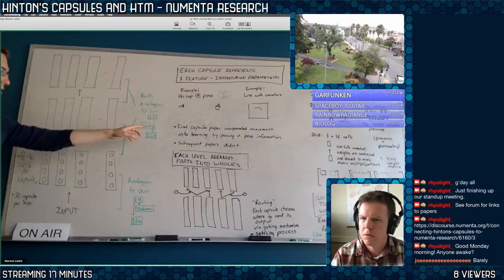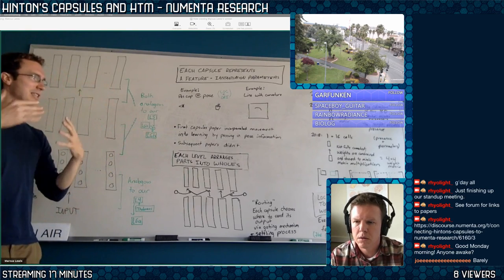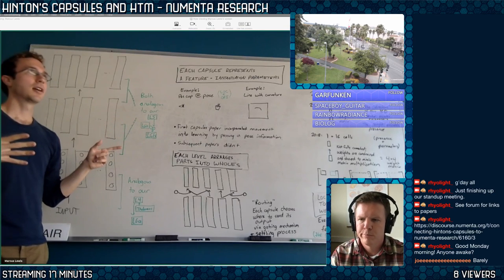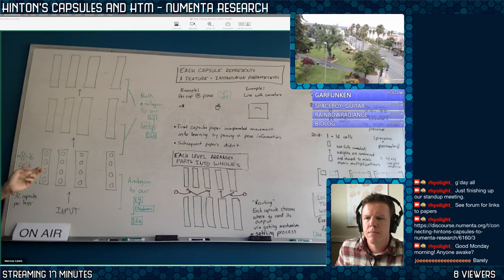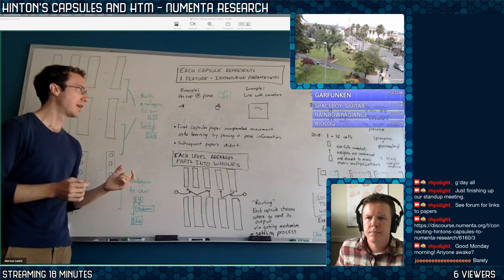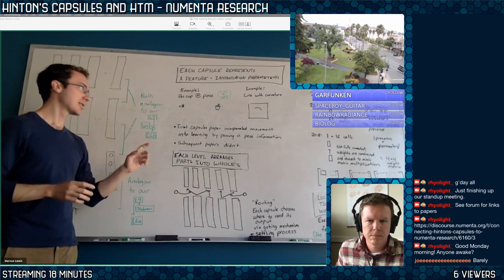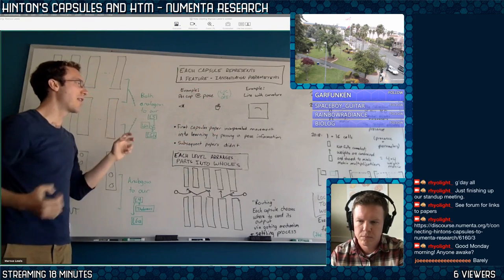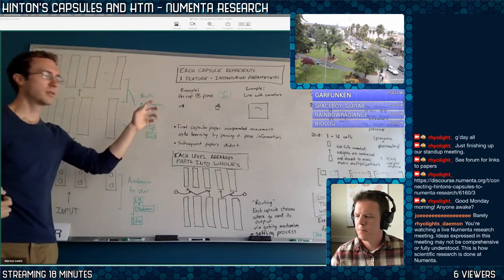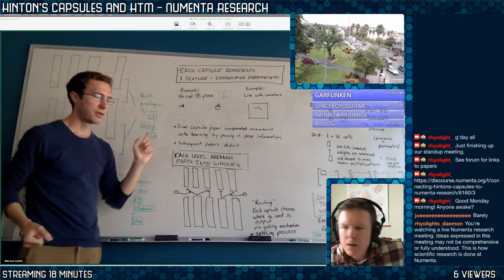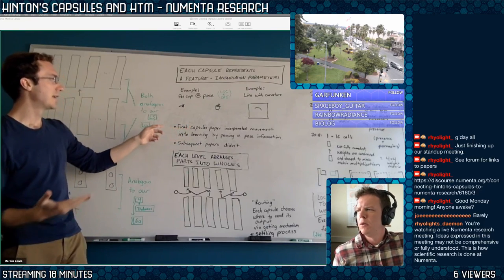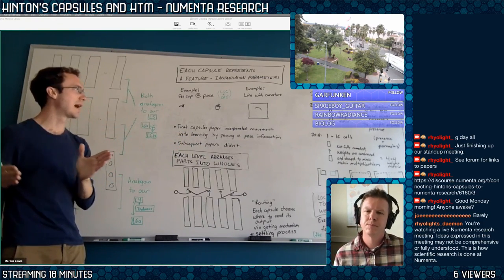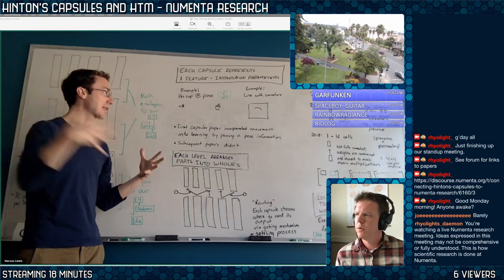One discussion topic I wanted to bring up, because it shows where they went a slightly different direction than I think we would. The first paper fed in essentially location information — at this sensor location, when the object is right here, here's what you sense — and trained the network on that, giving it that location and pose information for free. They justified it back then as incorporating movement into learning, though it didn't incorporate movement into inference. Movement was implied in the sense that they were passing in this kind of free location signal.